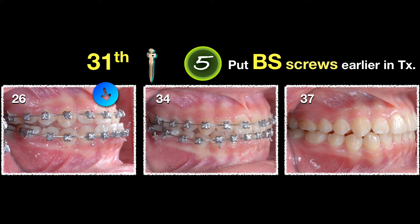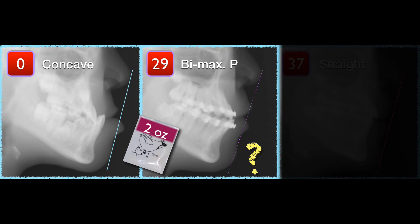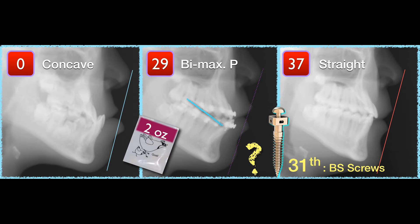In 31 months I finally gave up the Class 3 elastic and I put a Buccal Shield appliance in, and guess what? A couple months later I finished — and let me show you how powerful this Buccal Shield appliance is. After 29 months of Class 3 elastic I ended up with my worst result, but with the Buccal Shield just 6 months later I got a straight occlusion. That shows you how important the Buccal Shield appliance is.